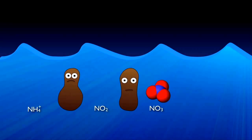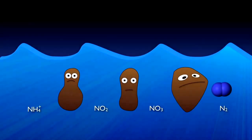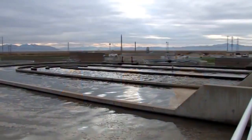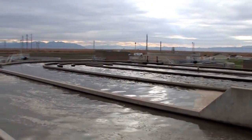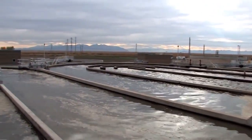As dissolved oxygen is depleted by the nitrifiers and other organisms in the basin, other specialized heterotrophic bacteria — denitrifiers — are able to thrive by using the oxygen attached to nitrate molecules for respiration, creating nitrogen gas as a byproduct. The nitrogen gas then simply bubbles out of the water into the atmosphere. Now let's go back to the beginning and take a closer look at each of these important steps in the nitrogen removal process.